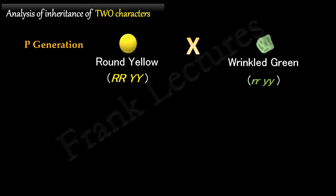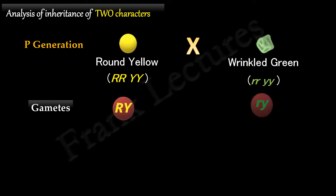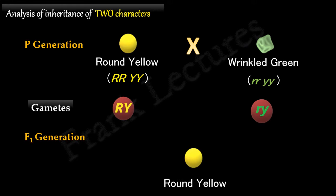The gametes produced by the plant with round yellow seeds will contain dominant R and Y alleles. Similarly, the gametes produced by the plant with wrinkled green seeds will contain recessive R and Y alleles. In the F1 generation, Mendel obtained all plants with round yellow seeds. Looking at the genotype of the F1 plant, dominant R and Y alleles came from one true breeding parent, and recessive R and Y alleles came from the other. Two different colors are used to represent the genotype to highlight this fact.